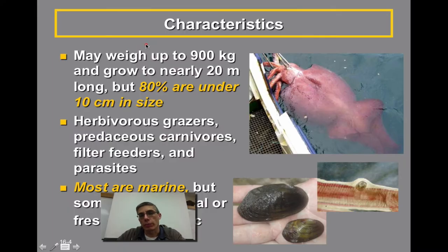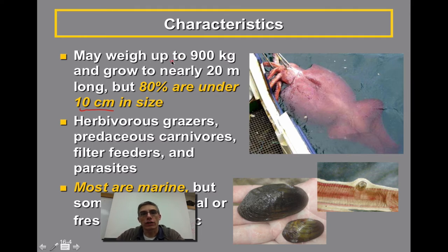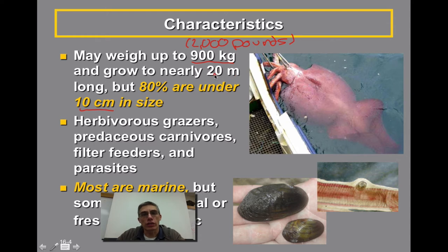About 80% of these animals are going to be 10 centimeters in size or smaller, but the other 20% can actually be pretty large. For example, the giant squid on the right-hand side can get up to 900 kilograms — that's about 2,000 pounds — and some of those mollusks can get to be nearly 20 meters in length, which would be around 60 to 70 feet.